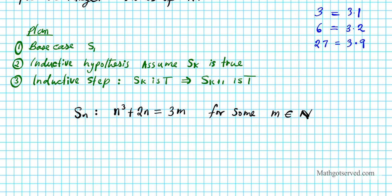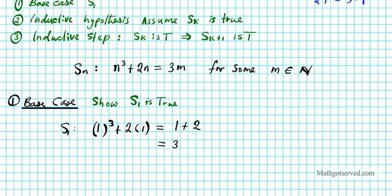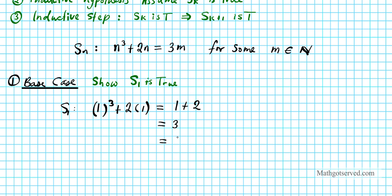Part 1: Base case. We want to show S₁ is true. We start from n=1 because the first positive integer is 1 — that's the foundation. Plugging in 1: 1³ + 2(1) = 1 + 2 = 3. Can I write 3 as an integer multiple of 3? Absolutely — 3 = 3×1, so m = 1. This confirms the base case is true.